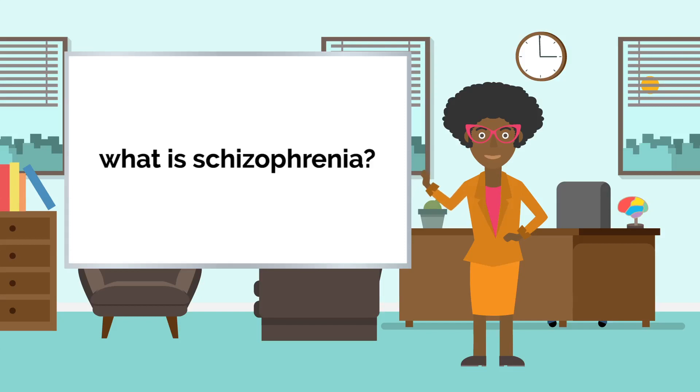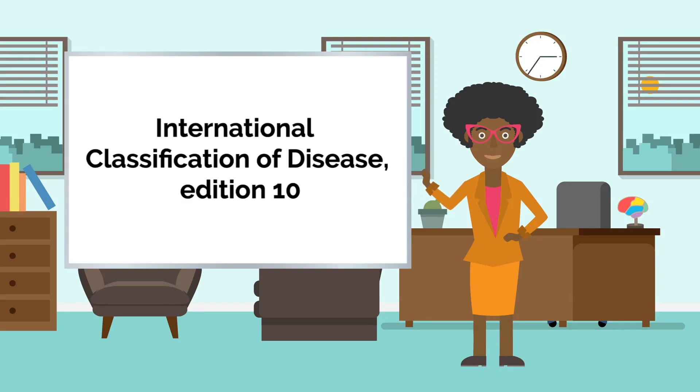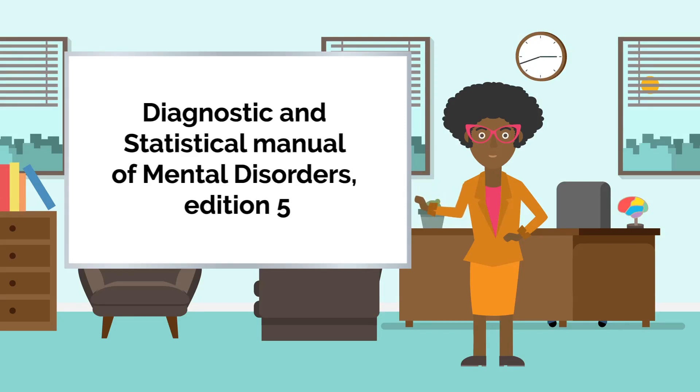Schizophrenia is classified according to symptoms listed in diagnostic manuals, which will be used by psychiatrists to decide if a person has a particular disorder. The two main ones used are the ICD-10 and the DSM-5.